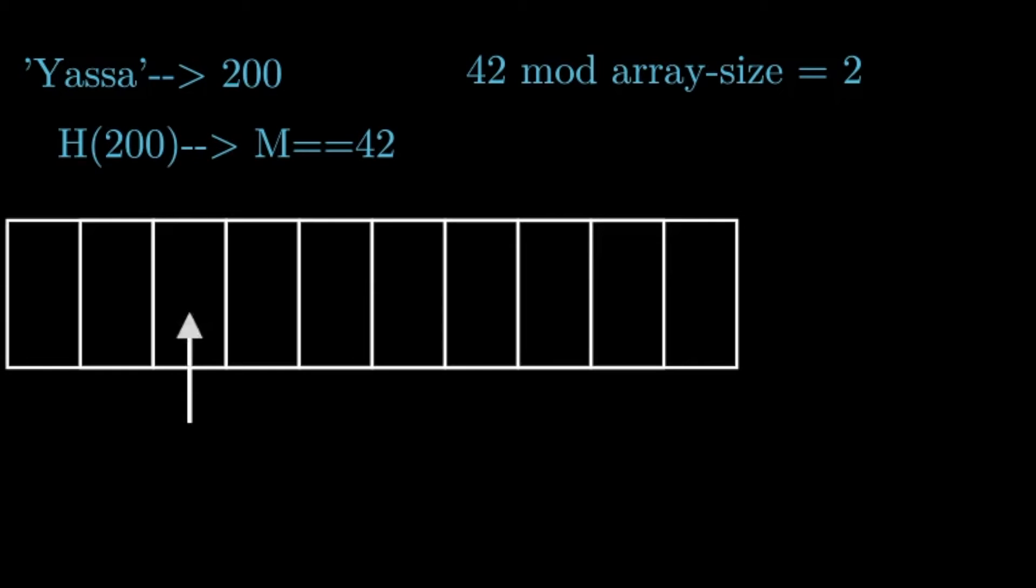So 200 isn't the actual ASCII value, I just wrote it in there for the sake of explaining it. The next thing you will want to do is hash that value using the hashing function, and let's suppose that gives you the value of 42. The next thing you do is take that value and mod it by the size of our array.